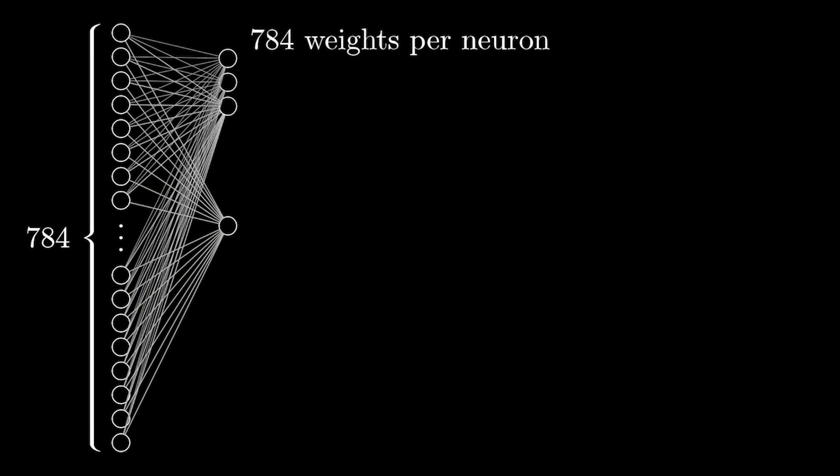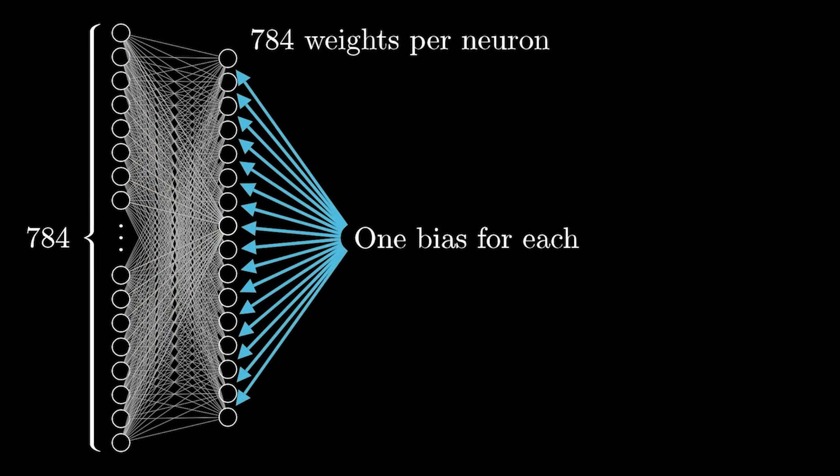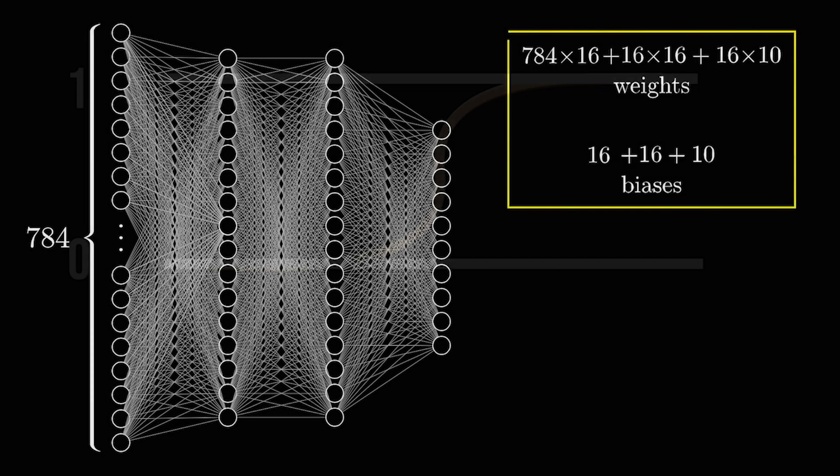It turns out that by stacking more and more layers of neurons, that is, by creating deep neural networks, we are able to model very complex functions. That's why it's called deep learning.